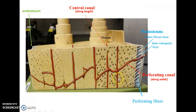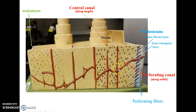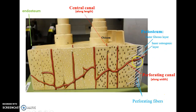The outside of the bone is covered by the periosteum with its outer fibrous and inner osteogenic layers. Perforating canals run along the width of the bone, while central canals run along the length; both carry blood vessels and nerves. Perforating fibers connect the periosteum to the bone, and the inside is lined by the endosteum.